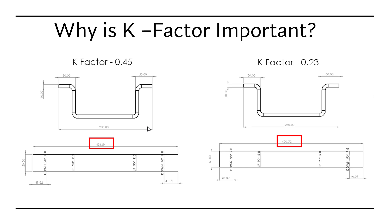Now I created a simple part using K factor 0.45 and K factor 0.23. Same part, same length, everything is the same, just the difference is different K factor. So with 0.45 we get approximately 434 long flat path, and with 0.23 K factor we get 420 approximate length of flat path.